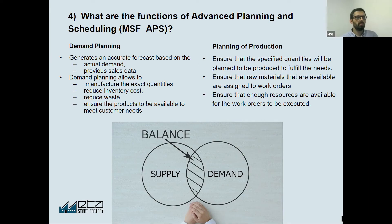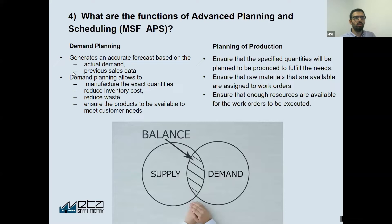Hello everyone. Basically we can speak about four different functions, and I will speak about two of them. The main important functions of APS are demand planning and planning of production.